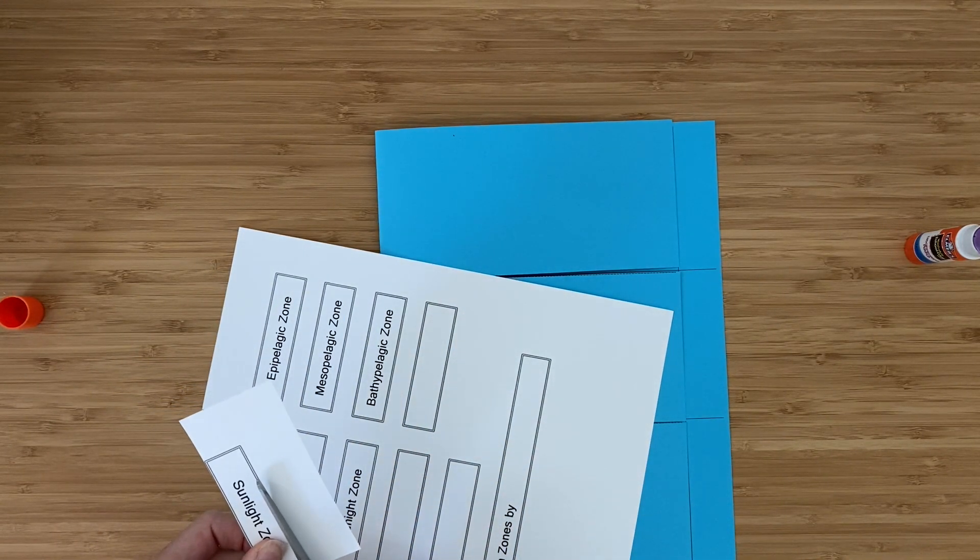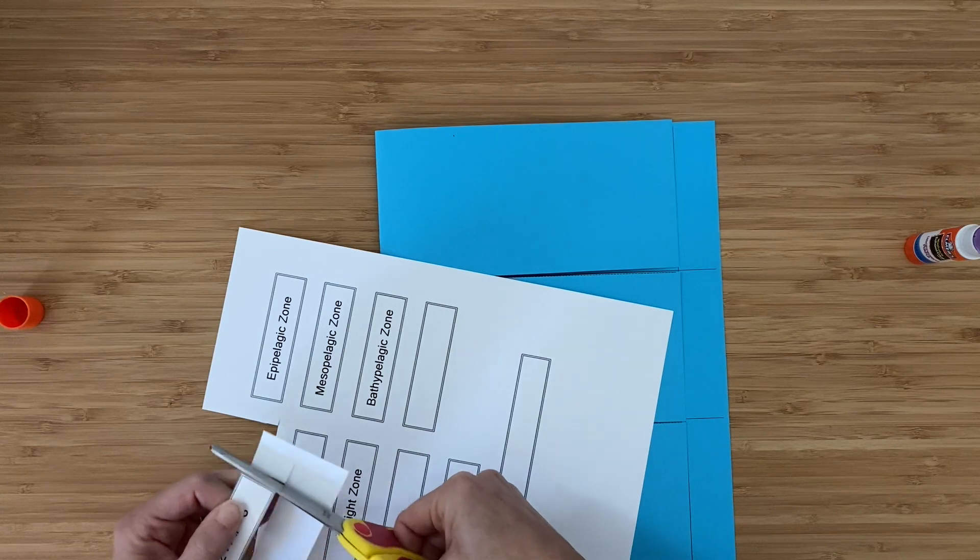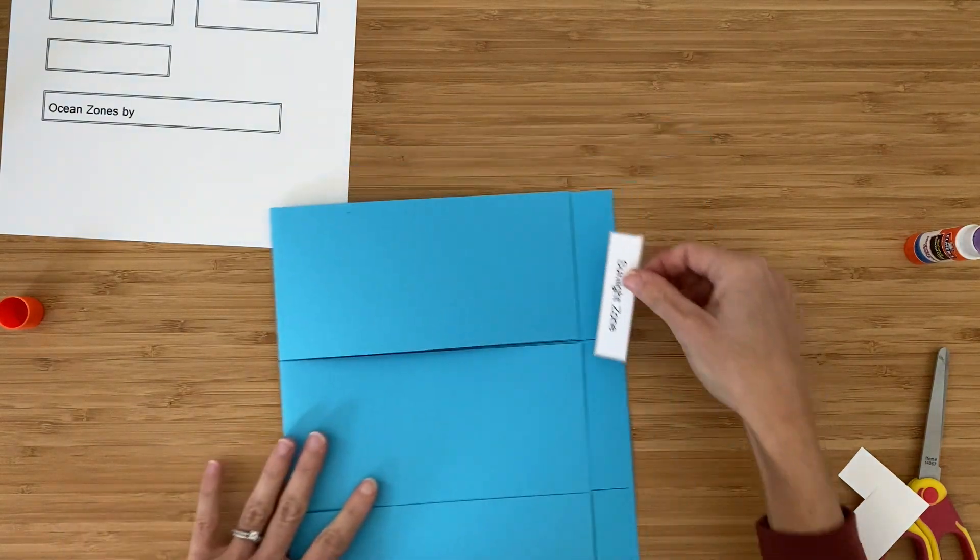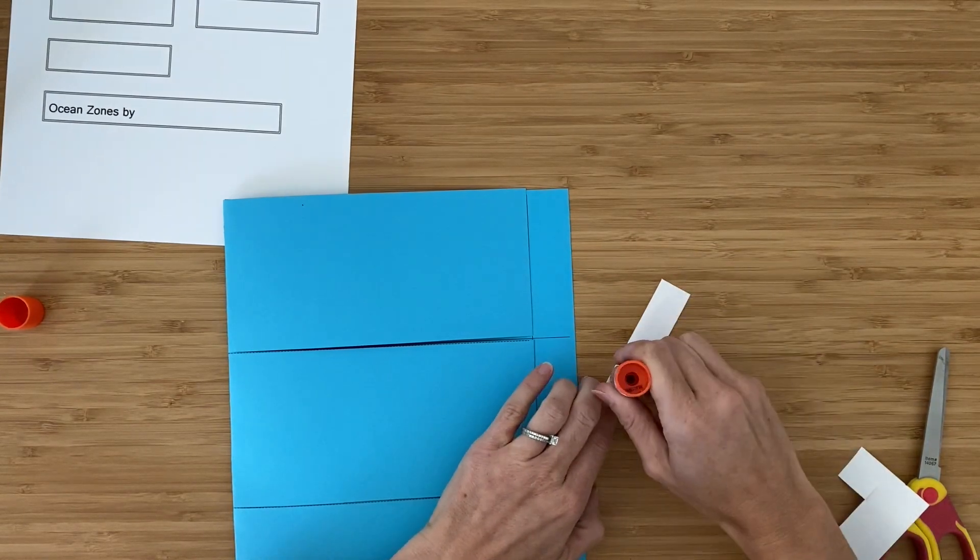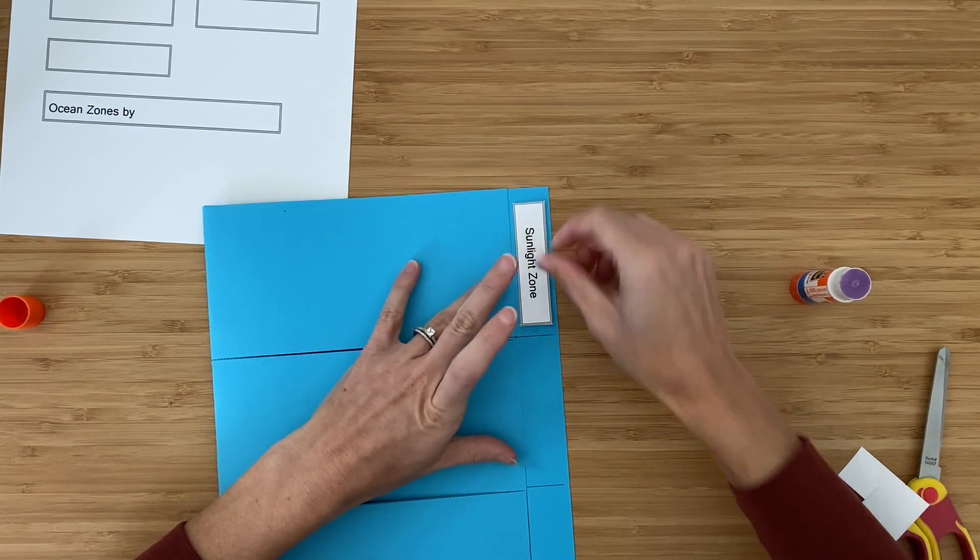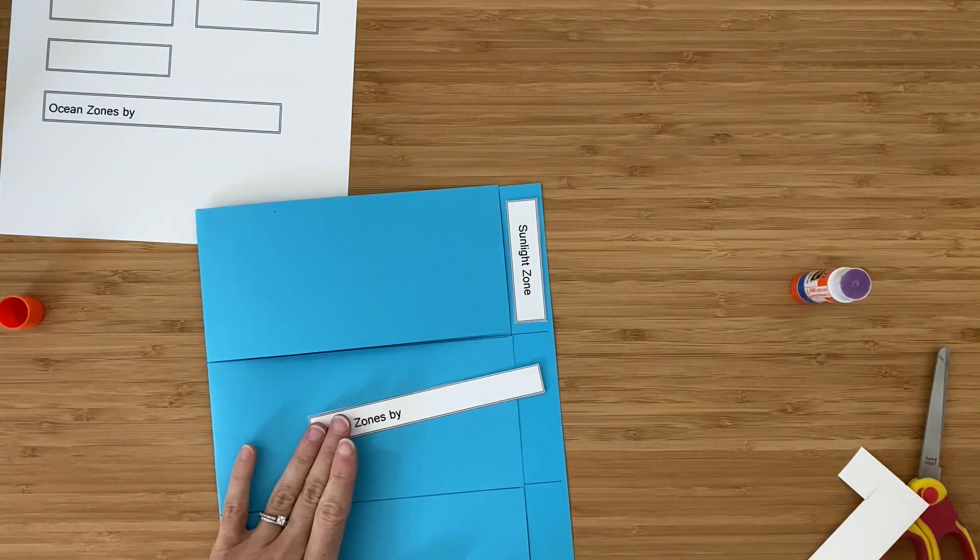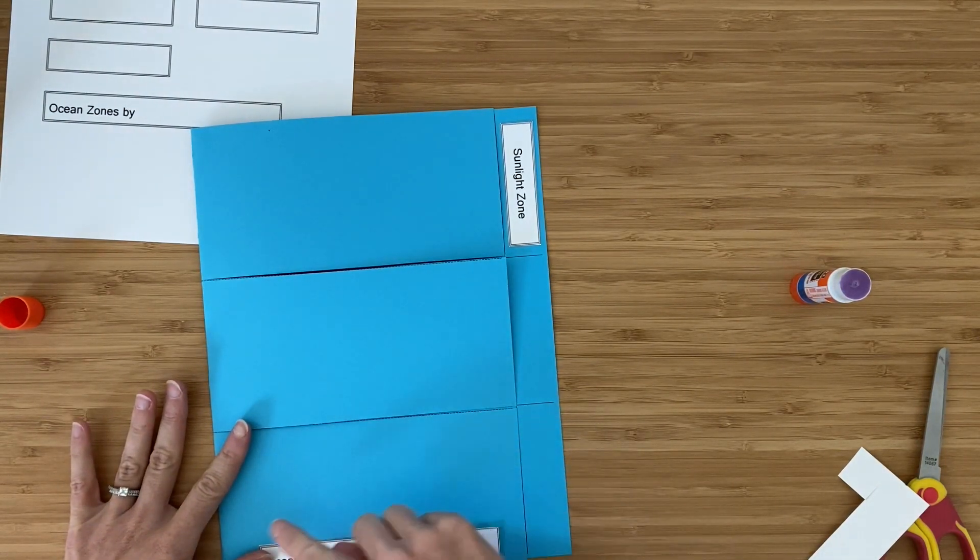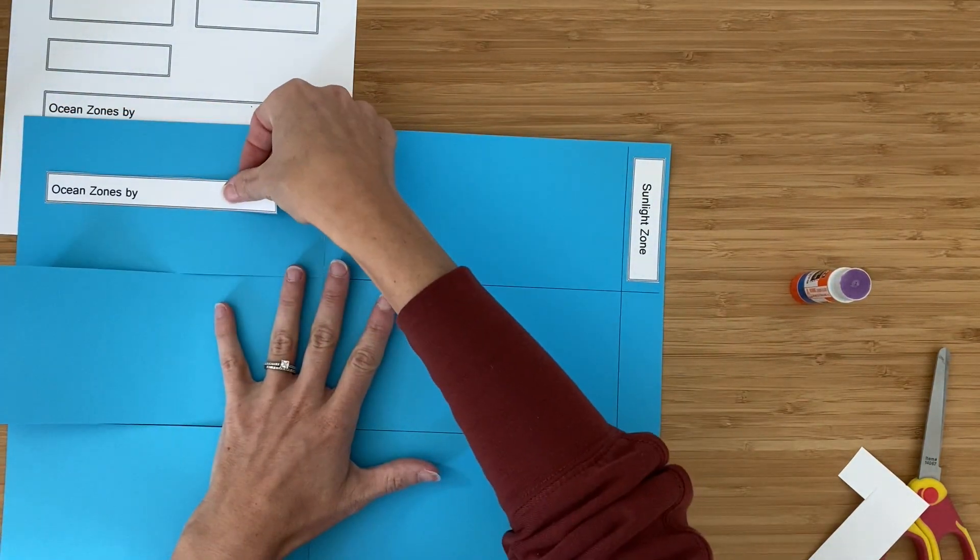As I was researching this project, I came across other names for these zones as well. So if you've been learning something different, there are some blank labels for you here to write those in. As you cut out the zones, go ahead and glue them in order on your oceans pages. There's also a spot for you to write your name. I would glue this title down here at the bottom, because there's fewer ocean animals that live down here. But you could also open it up and glue it inside if you would rather.